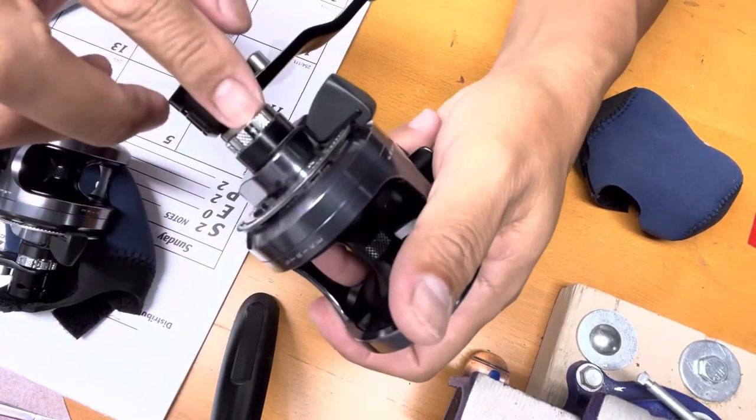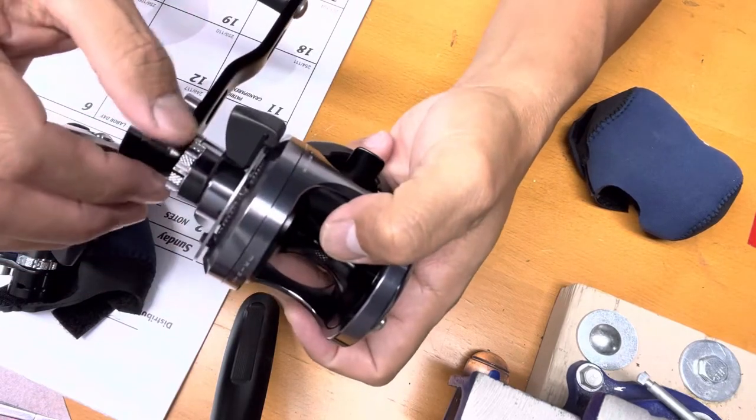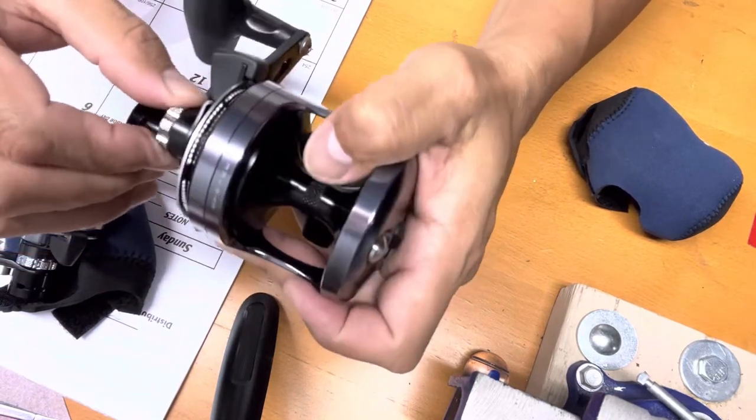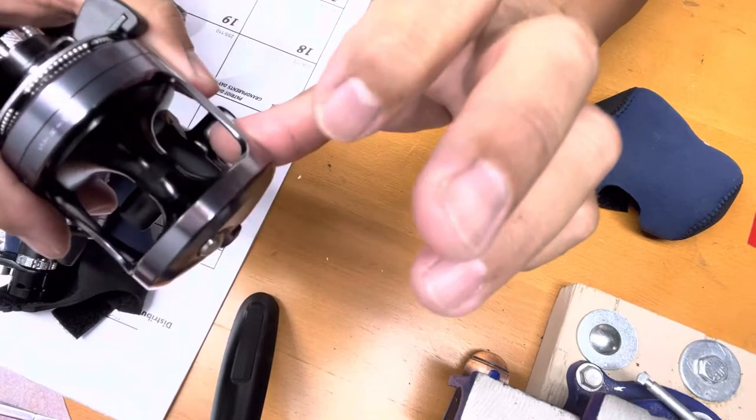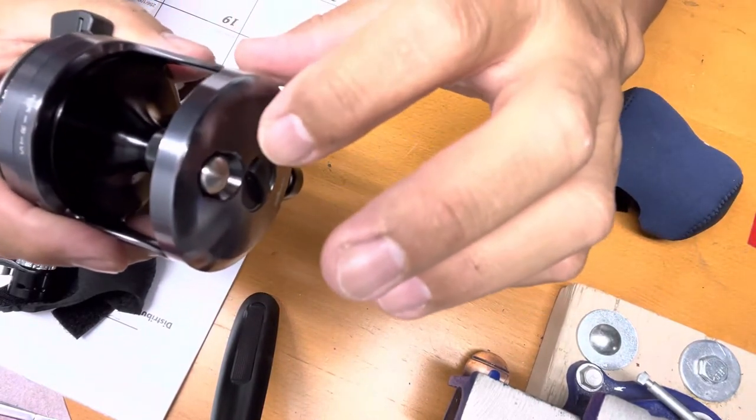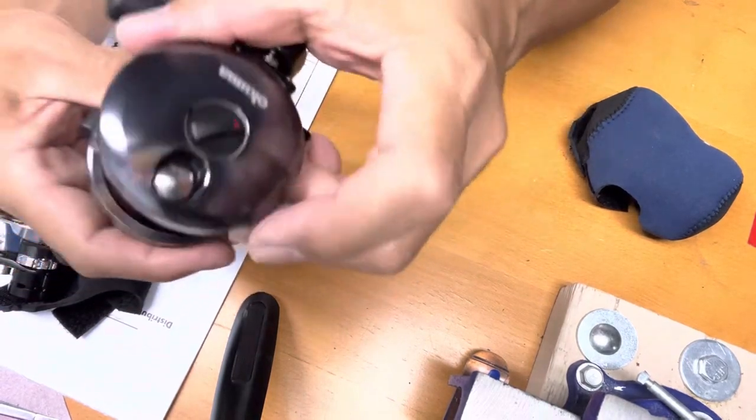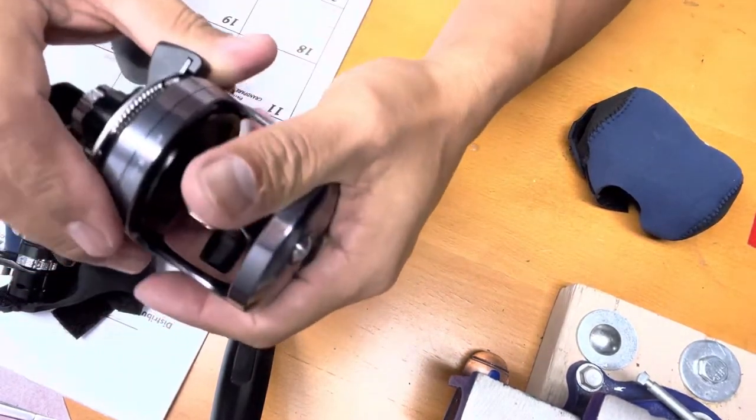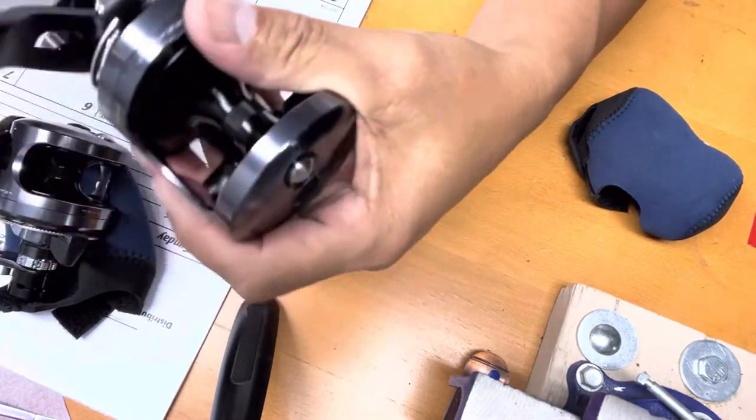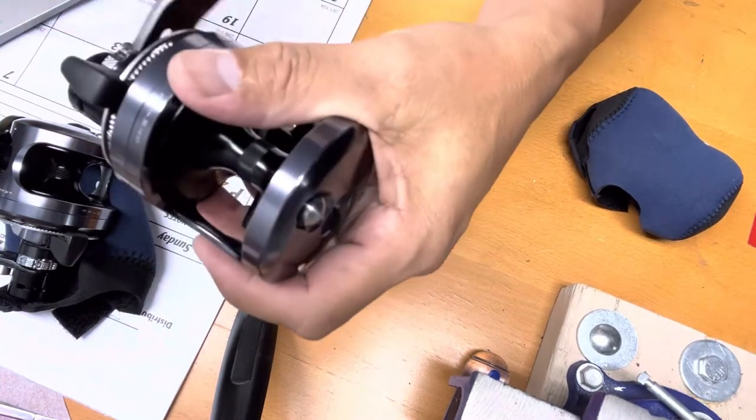Before you adjust this one, put this one on pre-spool. Then you can adjust this. Let's see how smooth it is. Wow, it's so quiet. And see the clicker here? This is the clicker. It's loud too.